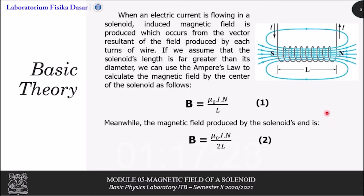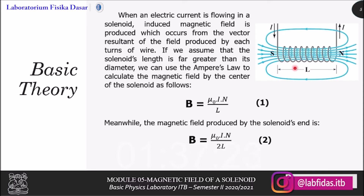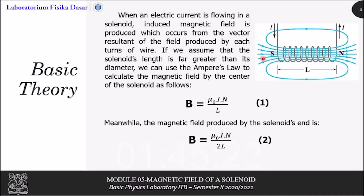Next is the basic theory. Given in this figure is a solenoid, which is a wire of conductor turned in a specified number of turns and also has a specified length, in this case L. When an electric current, in this case I, is flowing inside a solenoid, the induced magnetic field is produced which occurs from the resultant of each and every turn of the wire, as given by these blue lines.